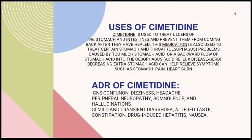Uses of Cimetidine: Cimetidine is used to treat ulcers of the stomach and intestine and to prevent them from coming back after they have healed. This medication is also used to treat certain stomach and throat problems caused by too much stomach acid or a backward flow of stomach acid into the esophagus. Decreasing extra stomach acid can help relieve symptoms such as stomach pain and heartburn.